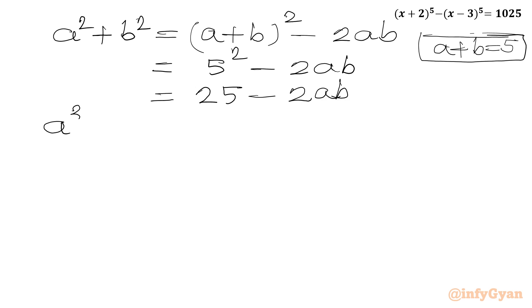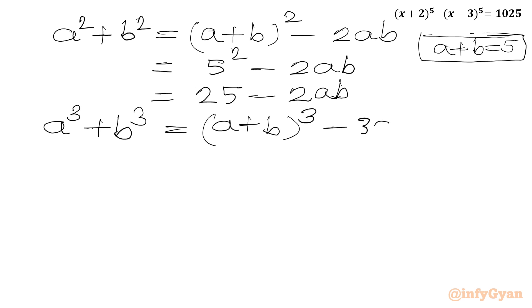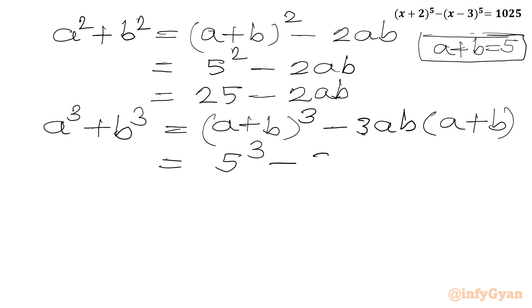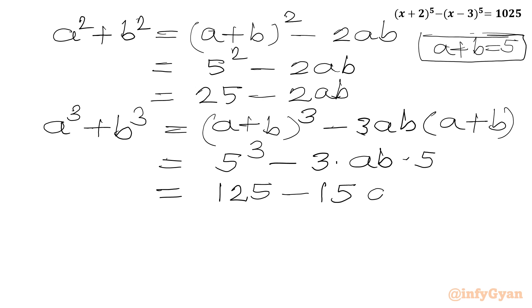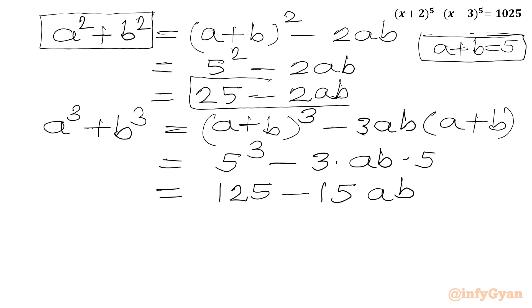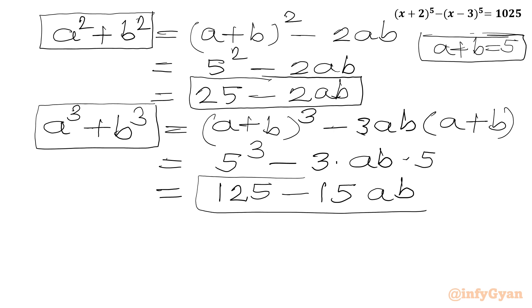Let us calculate a³ plus b³ also. Using the formula: (a+b)³ minus 3ab(a+b). Since a plus b is 5, I can write 5³ minus 3 times ab times 5. So a² plus b² is 25 minus 2ab, and a³ plus b³ is 125 minus 15ab.